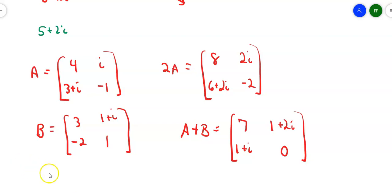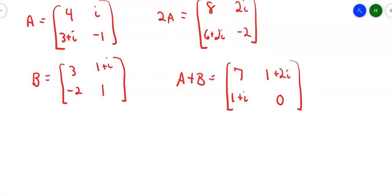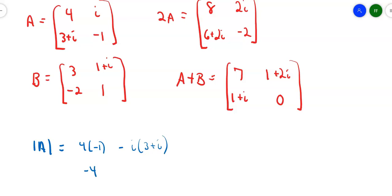What if I want the determinant of a complex matrix? Let's look at matrix A. The operation is the same — the only thing you have to do is remember a little bit about complex numbers. The determinant is going to be 4 times negative 1, minus i times 3 plus i. So 4 times negative 1 is negative 4, minus i times 3 is 3i, and i times i is i squared.